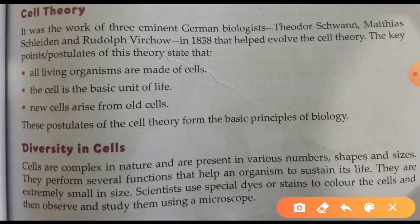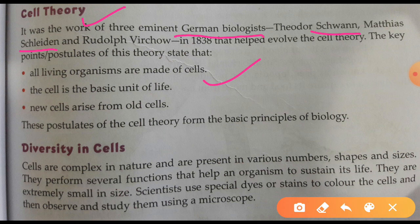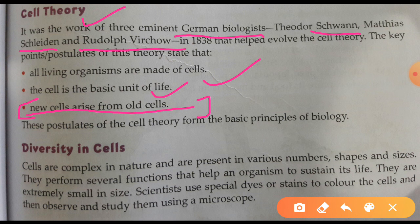The next topic is cell theory, given by German biologists Schwann and Schleiden in 1838. According to them, all living organisms are made up of cells, and the cell is the basic structural unit of life. A third point — that new cells arise from pre-existing old cells — was added by Rudolf Virchow. This is how the cell theory is summarized. Thank you very much.